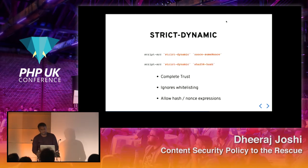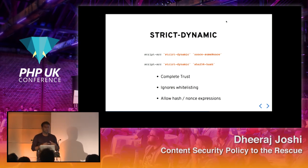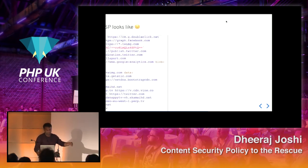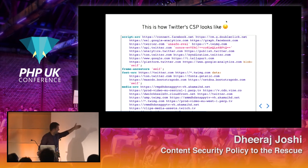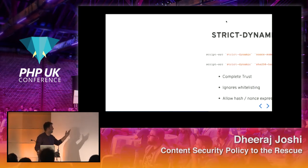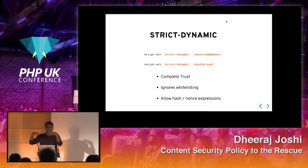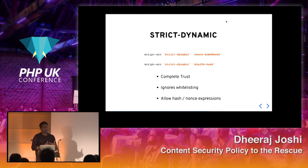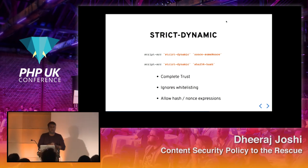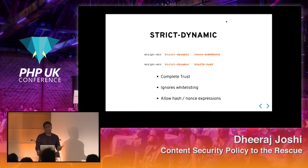We also have something called 'strict-dynamic.' This source expression is provided in script-src and basically gives complete trust to code in your application. Where Twitter was allowing different source, font-src, and media-src required by certain script elements, this could have been prevented with strict-dynamic. When the strict-dynamic expression is present, the browser ignores whitelisted domains and only allows domains with hash and nonce representations.